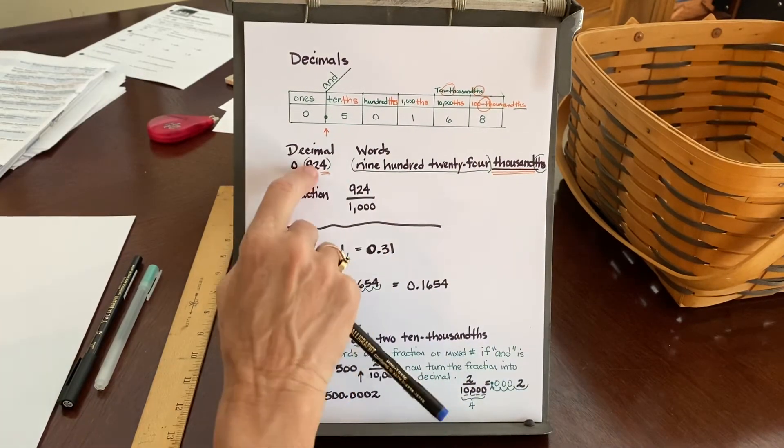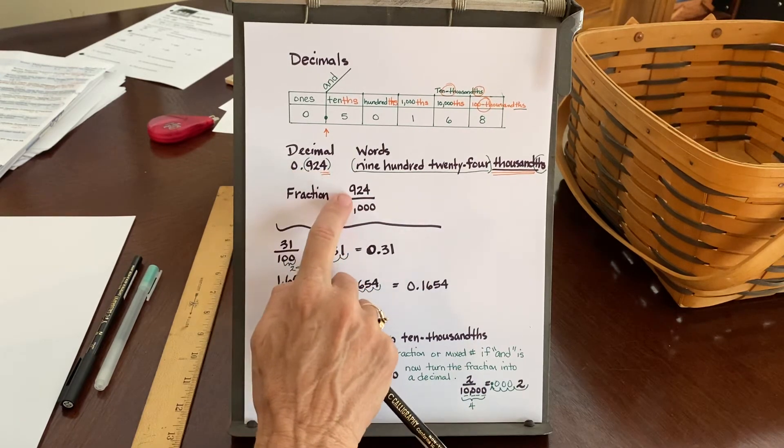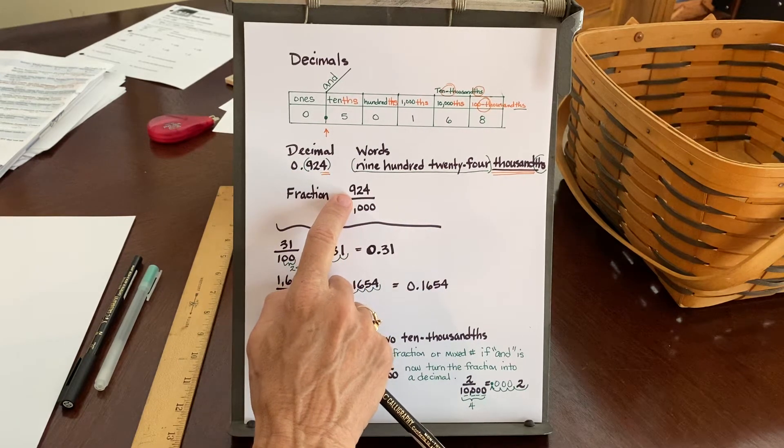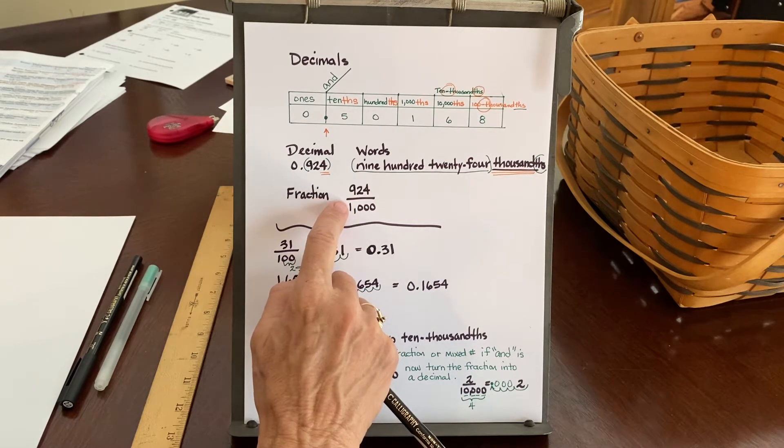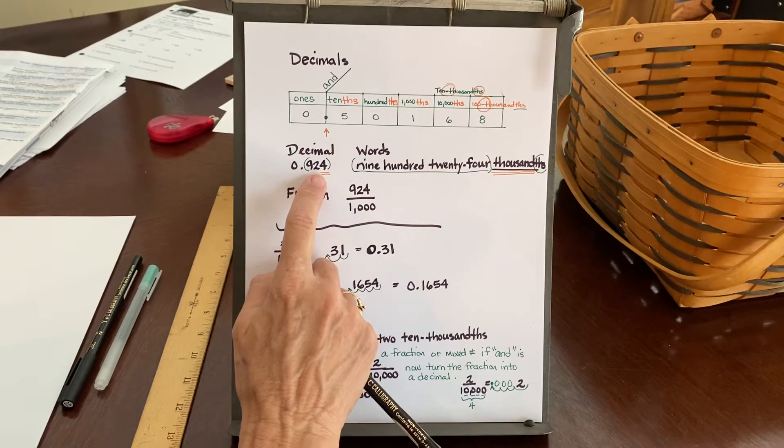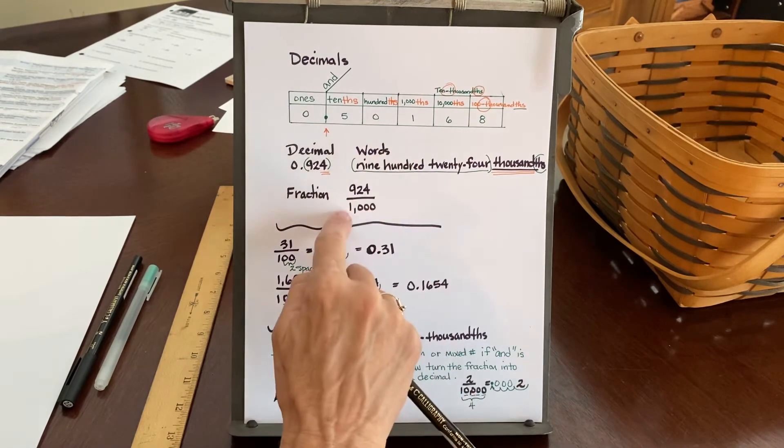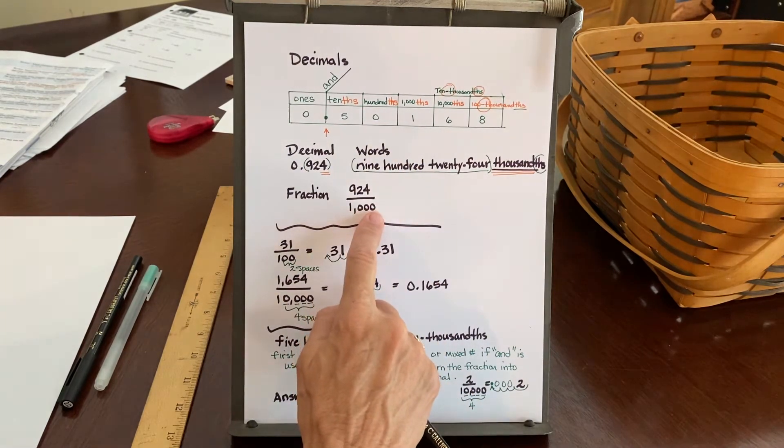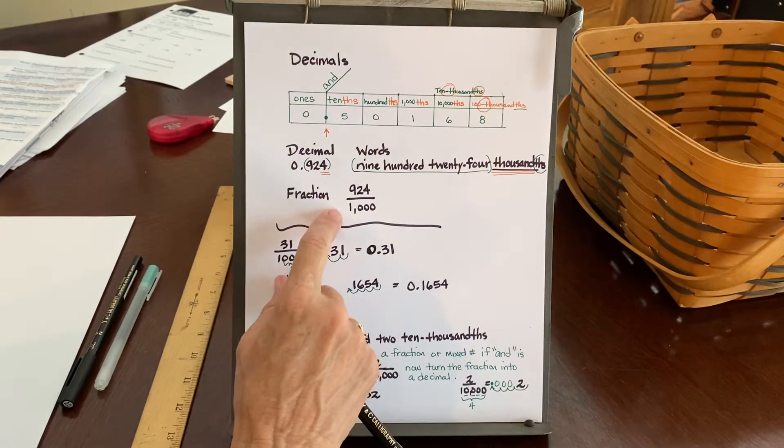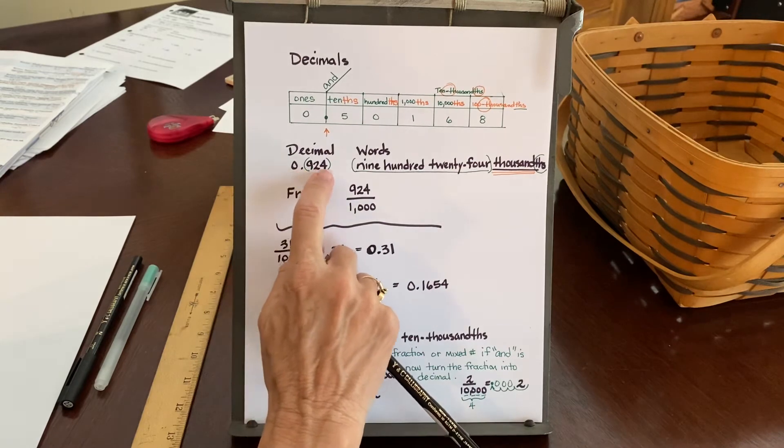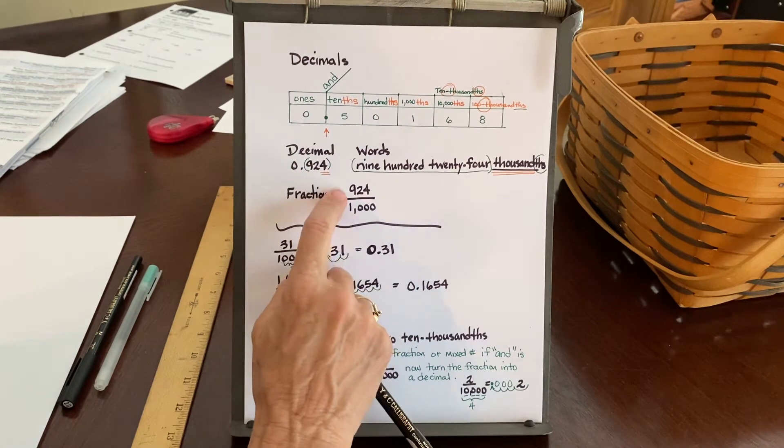Then we could also write this same decimal in a fractional form. We would have 924 in the numerator. That is on the top of the fraction bar. Then we would have the fraction bar. And because the number 4 was sitting in the thousandths column, the third place over to the right, we put the number 1,000 on the bottom. So really, to go from a decimal to a fraction is extremely easy because you're going to write whatever number you see behind the decimal. That's going to be your numerator of the fraction.